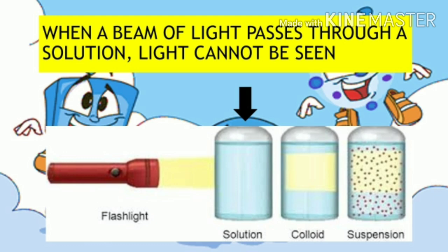Another way of identifying if a mixture is a solution is when a beam of light passes through it — light cannot be seen. This is because the particles of a solution are very small, about less than 1 nanometer in size, so the particles are not able to scatter the light, as shown in the picture with an arrow.